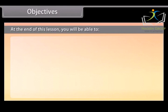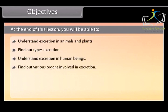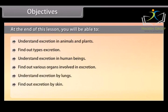At the end of this lesson, you will be able to: understand excretion in animals and plants, find out types of excretion, understand excretion in human beings, find out various organs involved in excretion, understand excretion by lungs, find out excretion by skin, and understand excretion by large intestine.